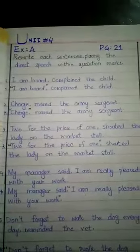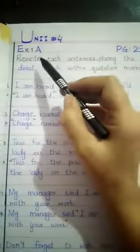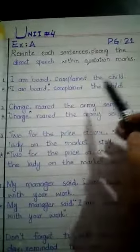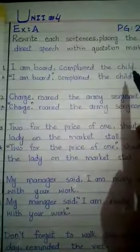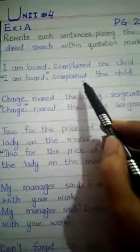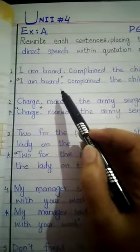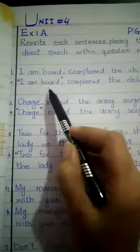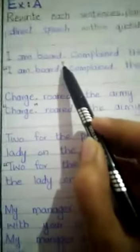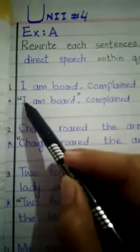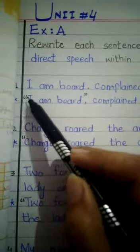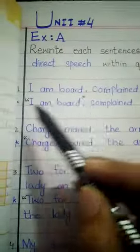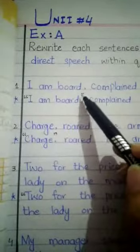Here I have done this exercise for you. It's unit number 4, exercise A, page 21. The question says: rewrite each sentence placing the direct speech within quotation marks. The statement given is: "I am bored," complained the child. The statement said by the child — "I am bored" — has to be written with quotation marks. One more point: quotation marks should be in inverted form at the start, and in a straight form at the end — they should not both be the same shape.